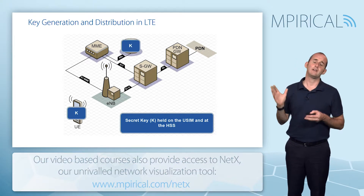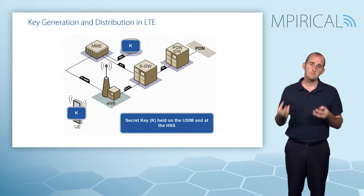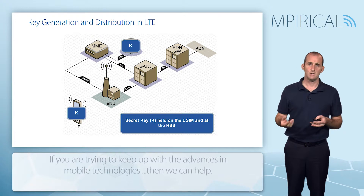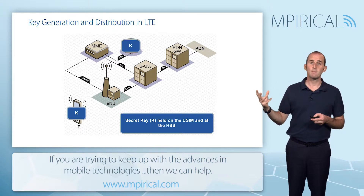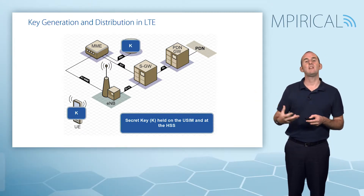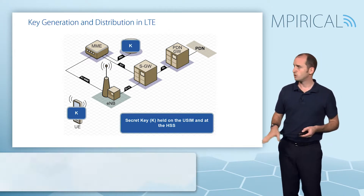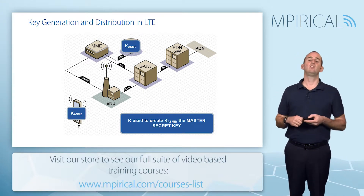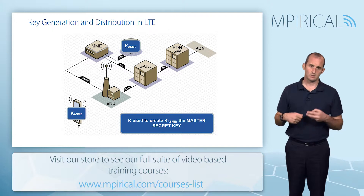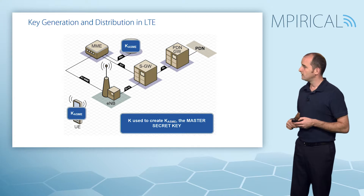To begin with, we have a secret key held on board the device — on the USIM — and also stored at the HSS. The reference to this secret key is the IMSI of the subscriber. If the MME can provide the IMSI to the HSS, the HSS can retrieve the correct key to generate the correct authentication vector information.